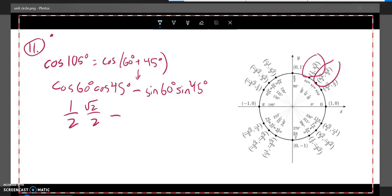And that's going to be minus sine of 60 degrees. That's the height. Root 3 over 2. Sine of 45 degrees, root 2 over 2.